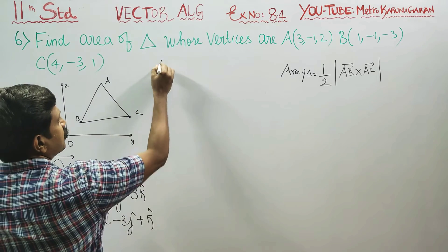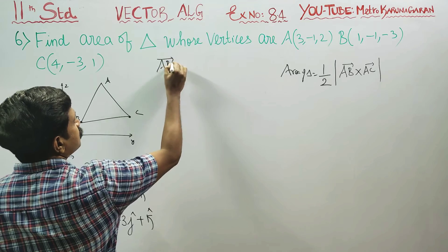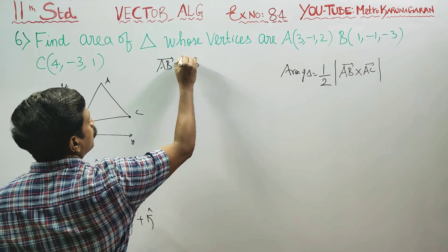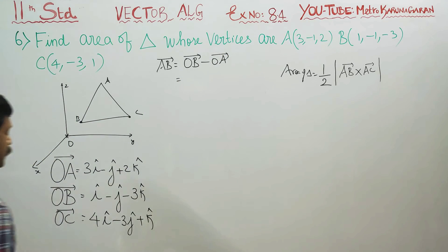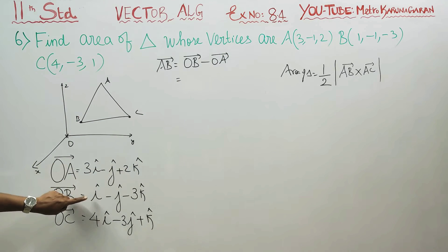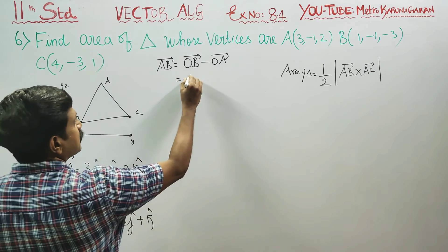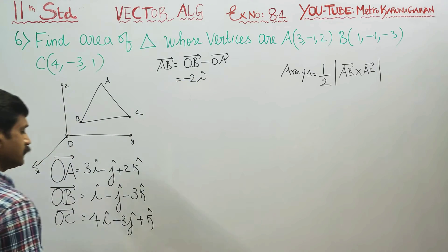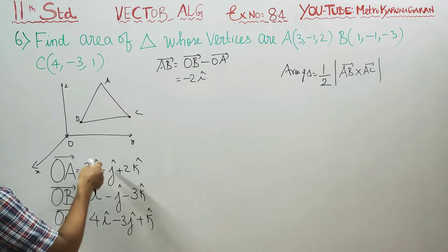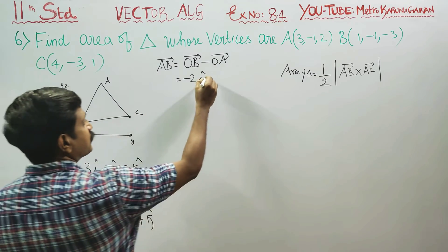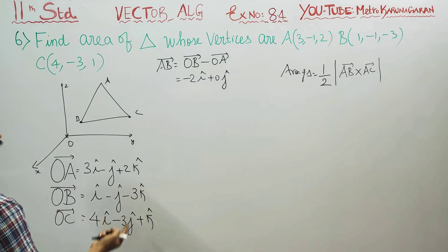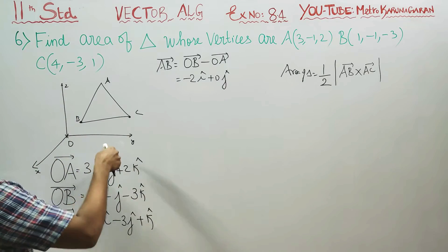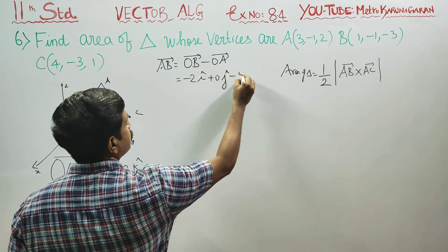Therefore, I must find the AB vector. The formula for AB vector is OB vector minus OA vector. OB minus OA: 1 minus 3 is minus 2i, then minus 1 minus of minus gives 0j, then minus 3 minus 2 is minus 5k.